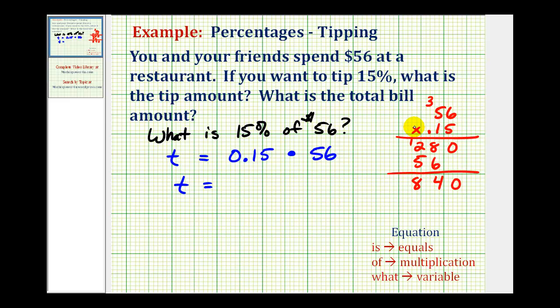Now because this number had two decimal places, our answer needs two decimal places. Starting from the right, we count over one, two decimal places. This product equals eight point four zero, which means the tip amount is eight dollars and forty cents.